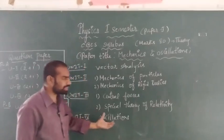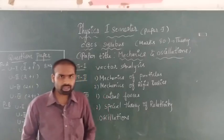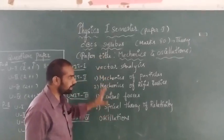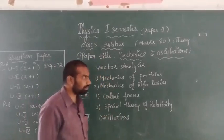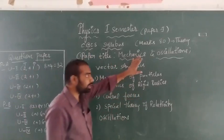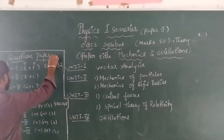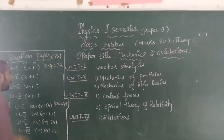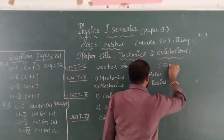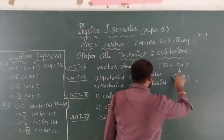In Unit 4 we have Oscillations: simple harmonic oscillators, damped harmonic oscillators, and forced oscillations. So those are the four units. For theory, the maximum marks in the question paper are 80 marks. In total we have 100 marks: 80 marks for theory plus 20 marks for internal assessment.